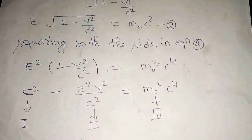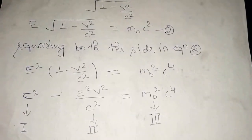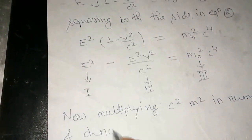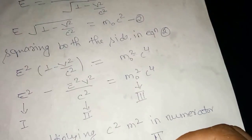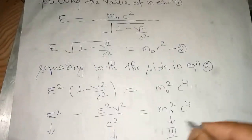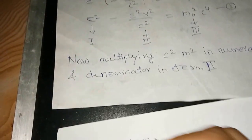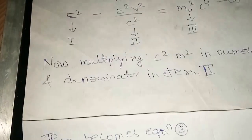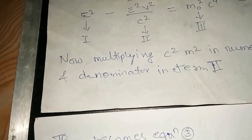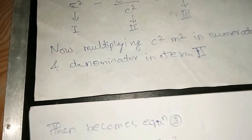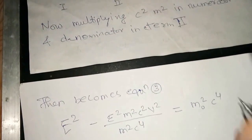Multiplying by m square c square in numerator and denominator to form equation 3: E square minus m square c square v square divided by m square c to the power 4, equal to m-naught square c to the power 4.